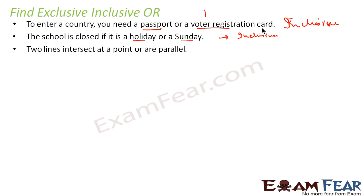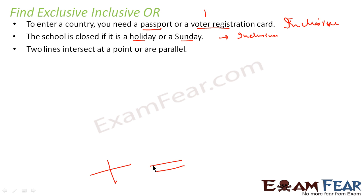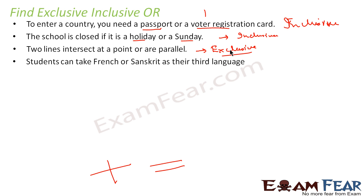Two lines intersect at a point or are parallel. If there are two lines, at any given point in time only one condition can be true — they can either intersect or they can be parallel; both cannot happen at the same time. You can't have two lines that are both parallel and intersecting. That is not possible. So this is an example of exclusive.